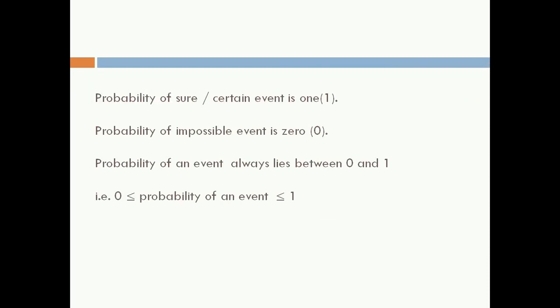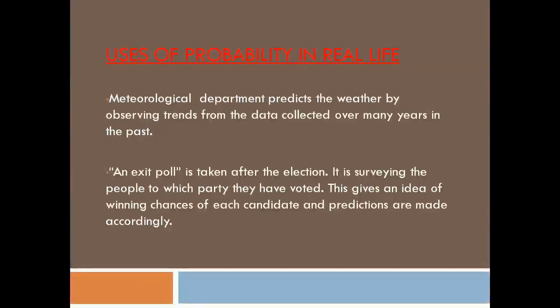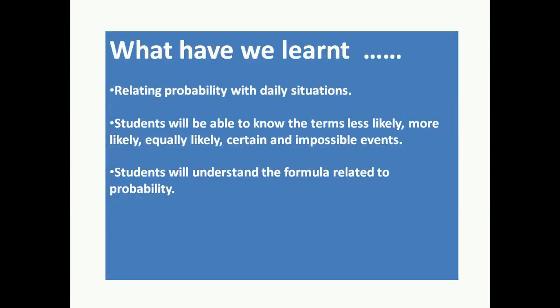The probability of a sure or certain event is always 1. When we are sure that a certain thing is going to happen, its probability will be 1. Probability of an impossible event is 0, and the probability of any event always lies between 0 and 1. Probability is used in real life — for example, by the meteorological department to predict weather, and in exit polls after elections to survey and predict outcomes.